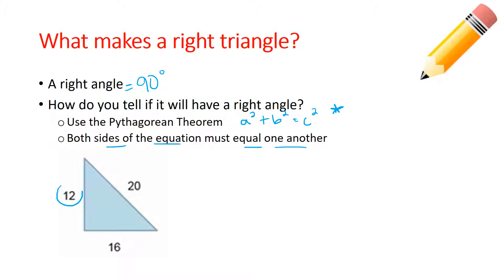If we took this 12 right here and we squared it, so 12 squared plus the other leg, 16 squared, should equal 20 squared. We know that 12 squared is 144. We have 144. We know that 16 squared is 256 and 20 squared is 400. So 256 plus 144 gives me 400.